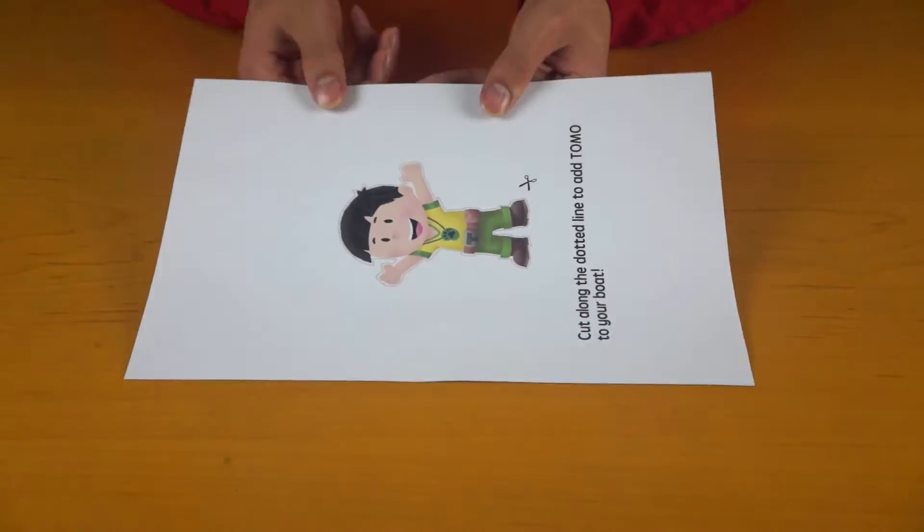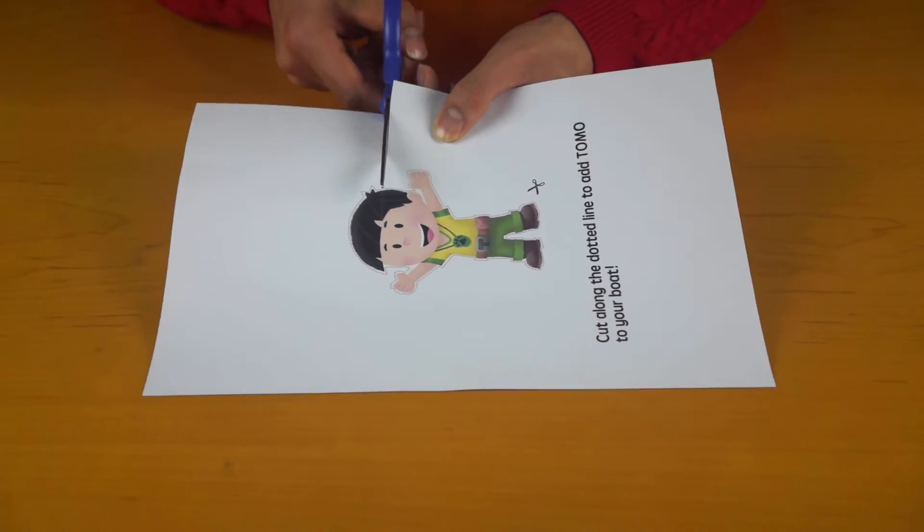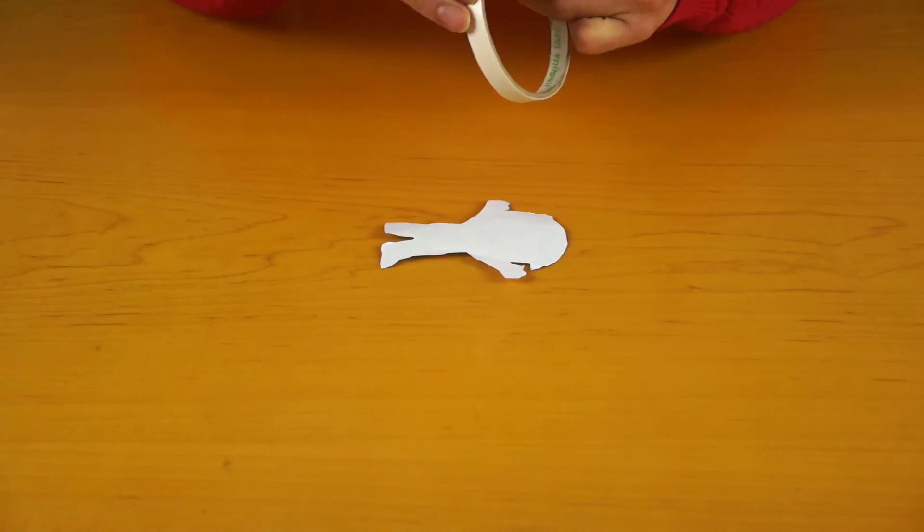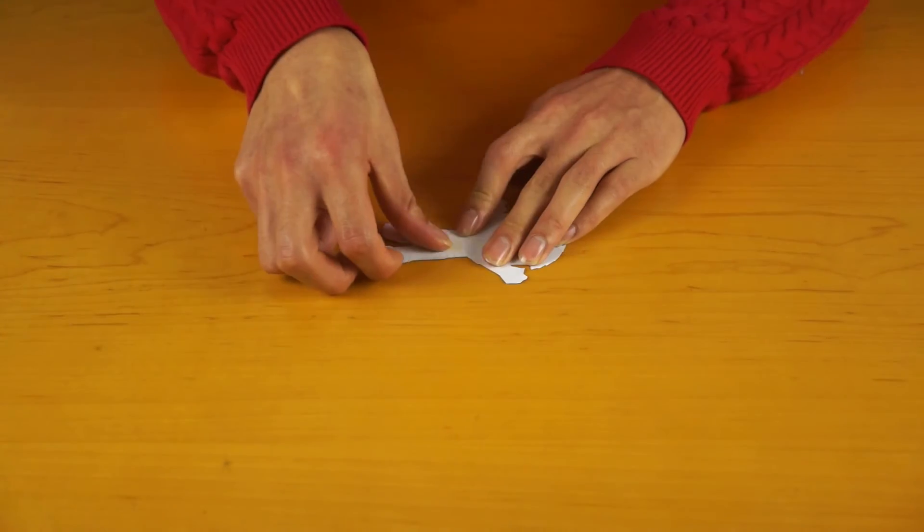If you want to add something special to your boat, you can print out Tomo from tomoadventures.com and cut him out. Then you can tape him to your boat.